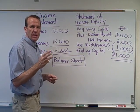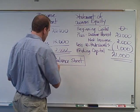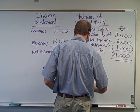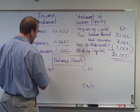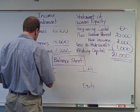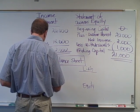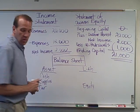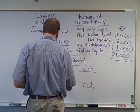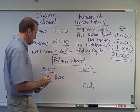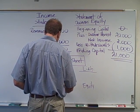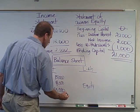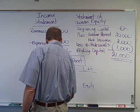Now we're ready for the third financial statement, the balance sheet. The balance sheet is the accounting equation — assets on one side, and liabilities and equity on the other side. Let's say the assets are cash, supplies, and a car. Our cash in the business right now is $15,000. Our supplies are $4,000, and our car was purchased for $10,000, so it has a balance of $10,000. So our total assets are $15,000 plus $4,000 plus $10,000, which equals $29,000.